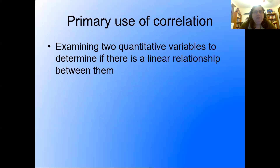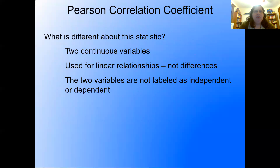The primary use of correlation is to examine two quantitative, two continuous variables to determine if there's a linear relationship between them. I'm introducing this new term 'linear' — hold on to that for a bit and we'll come back to it. There are actually a few different correlation coefficients, but we're just going to talk about the Pearson correlation coefficient.